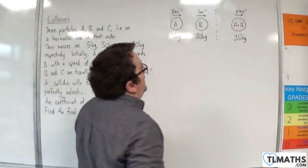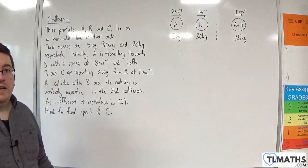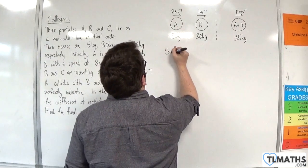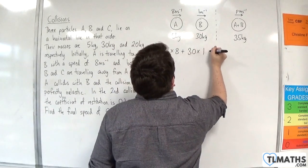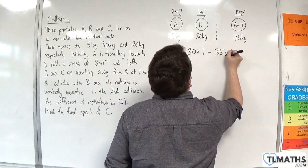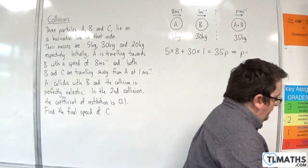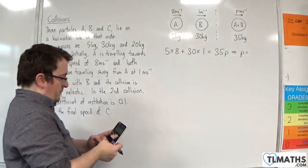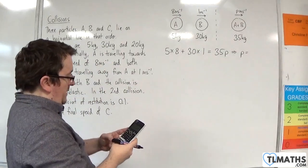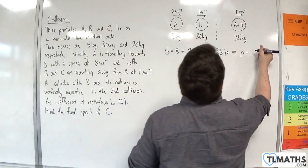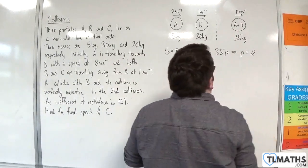Because of this, we can now use the conservation of linear momentum and say that we would have 5 times 8 plus 30 times 1 must be equal to 35 times P. So, 5 times 8 plus 30 times 1, and then divide that by 35, and so we get 2. So P is 2 metres per second.